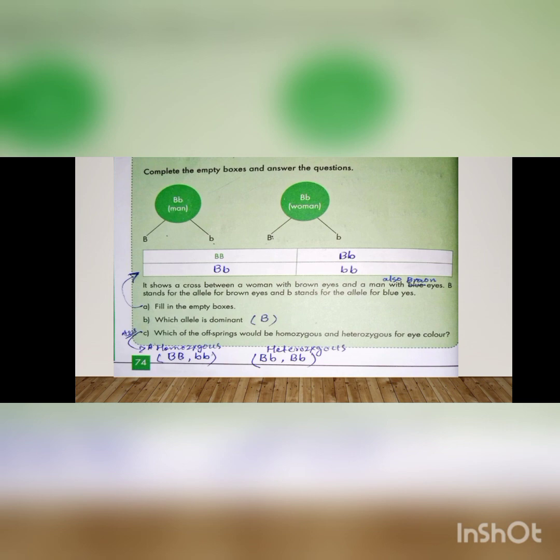Fill in the empty boxes. Man ke do gametes hain: capital B and small b. Woman ke bhi do gametes hain: capital B and small b. Capital B (man) × capital B (woman) = BB. Capital B (man) × small b (woman) = Bb. Small b (man) × capital B (woman) = Bb. Small b (man) × small b (woman) = bb. Is tarah se aap Punnett square table fill kar lenge.